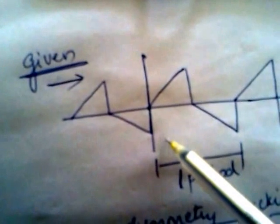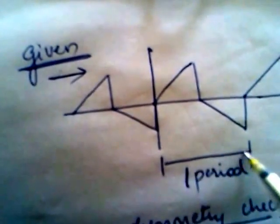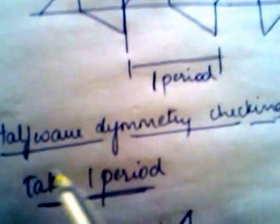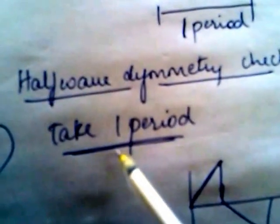This is the given signal. This is one period. To check the halfway symmetry, you consider one period. Now you time inverse it, and then shift that by T/2 to the left.